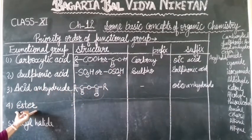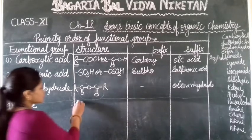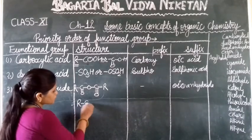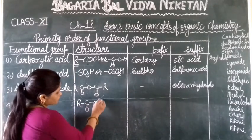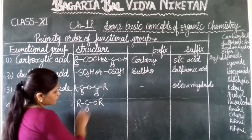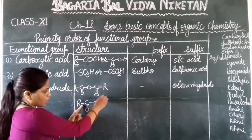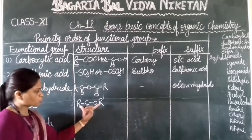Next, our functional group is ester. Ester is written as R-COO-R. There are two R groups: one is the starting alkyl group and the other is the one attached to the oxygen.